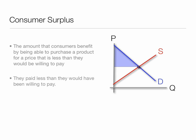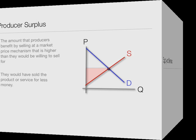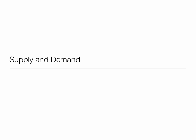They paid less than they would have been willing to pay — they got a good deal. Producer surplus is the amount that producers benefit by selling at a market price that is higher than they would be willing to sell for. They would have sold the product or service for less money. And that's an introduction to supply and demand.